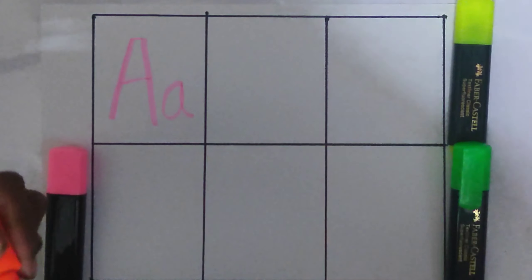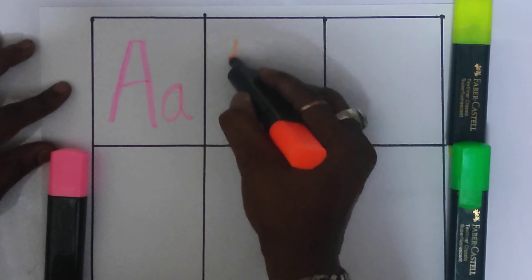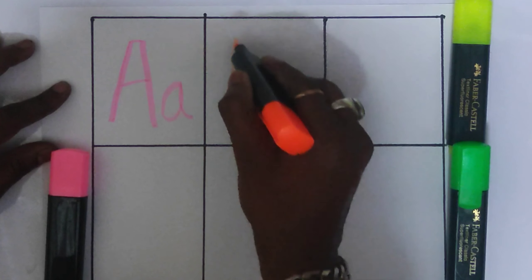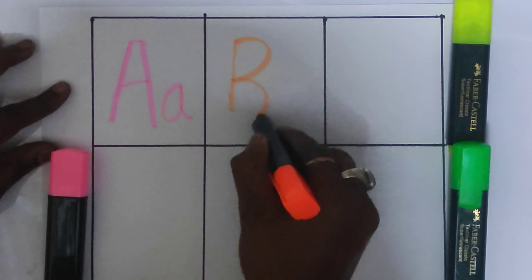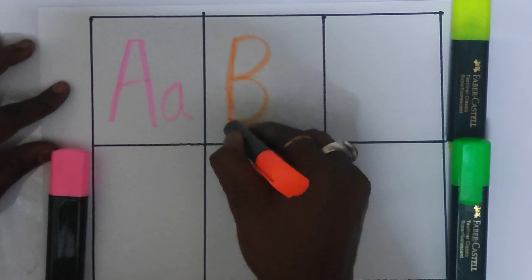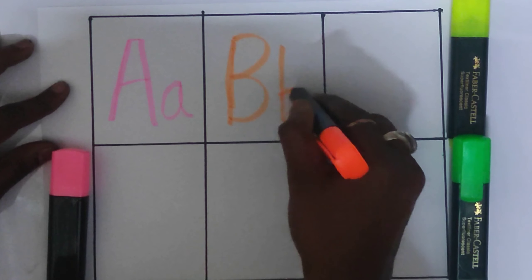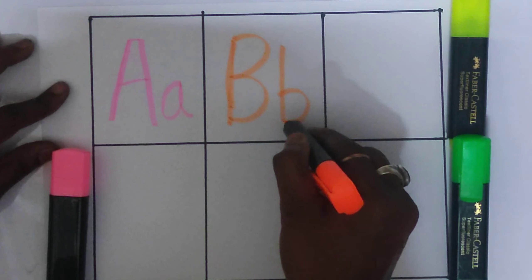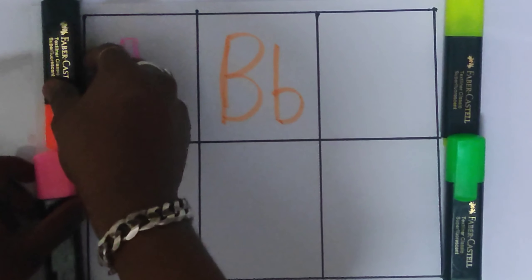Orange color. Green color. B. B for ball. Small b. B for ball.